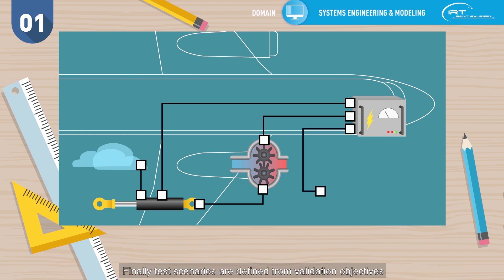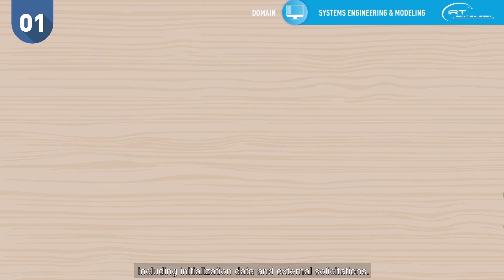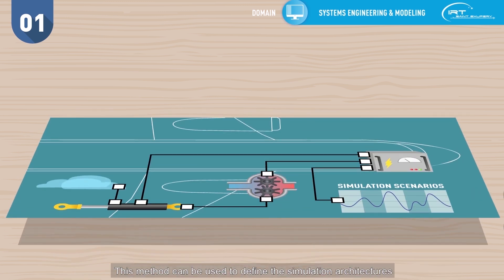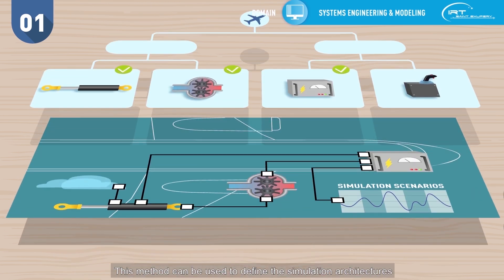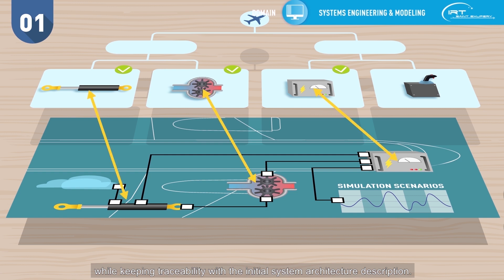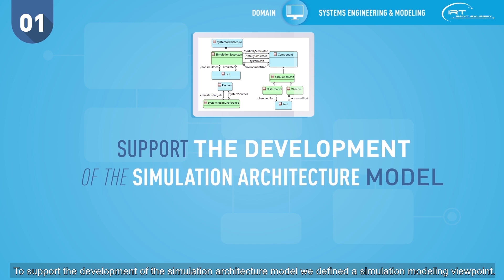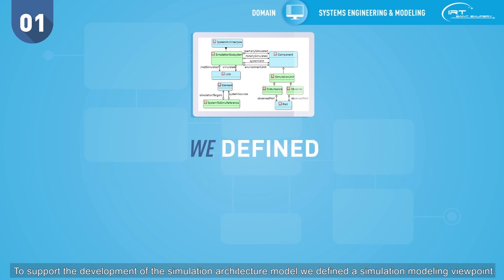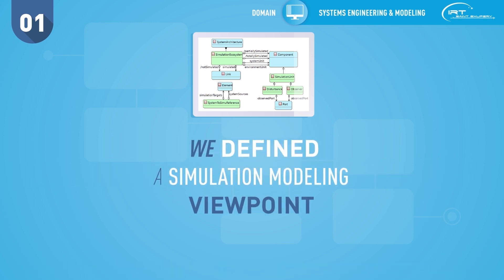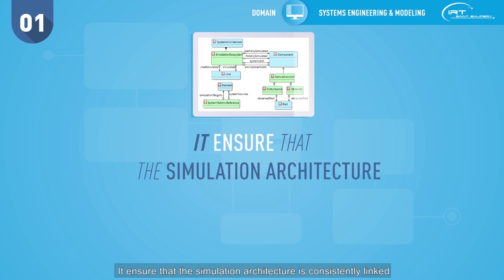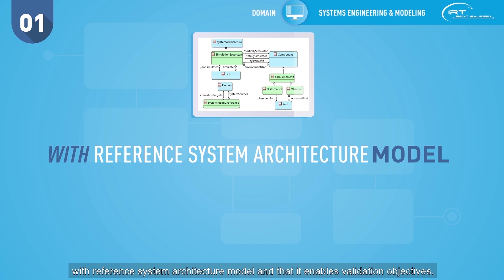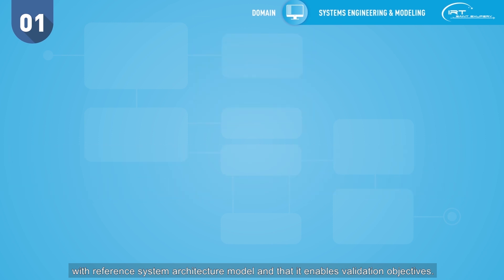This method can be used to define the simulation architectures while keeping traceability with the initial system architecture description. To support the development of the simulation architecture model, we defined a simulation modeling viewpoint. It ensures that the simulation architecture is consistently linked with reference system architecture model and that it enables validation objectives.